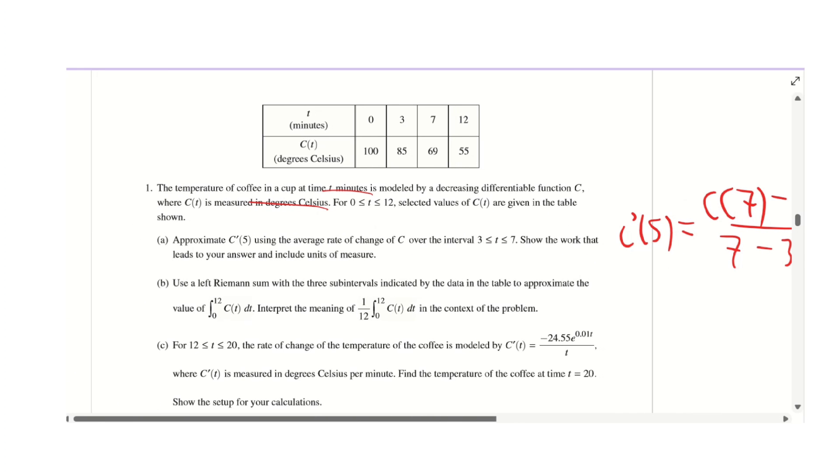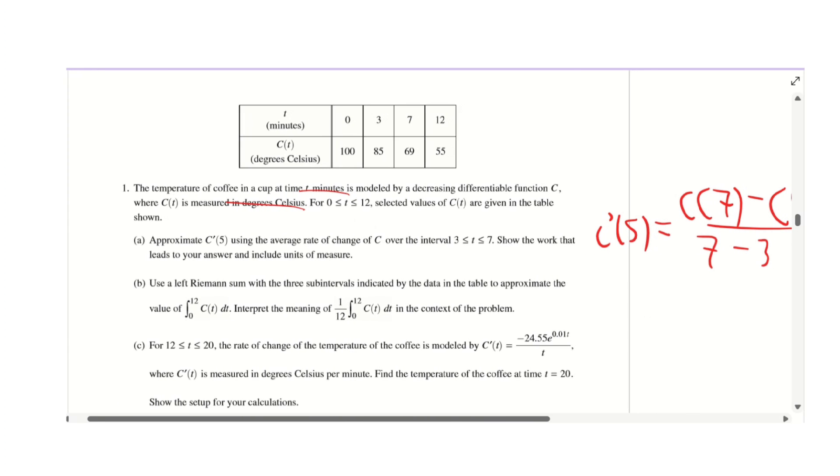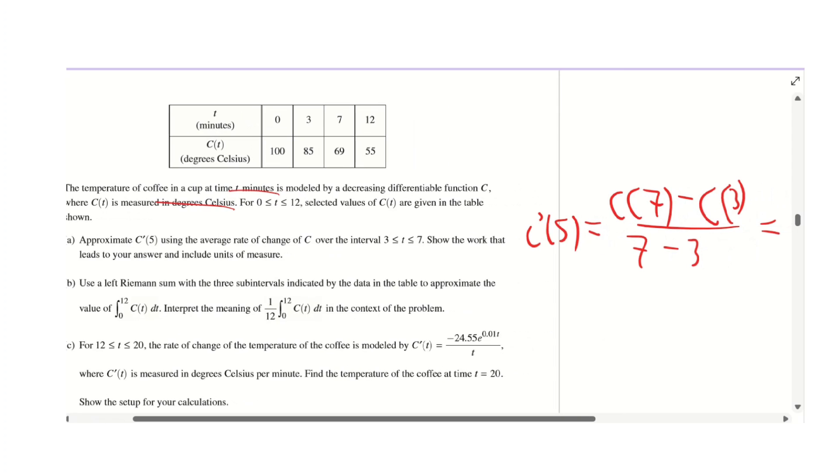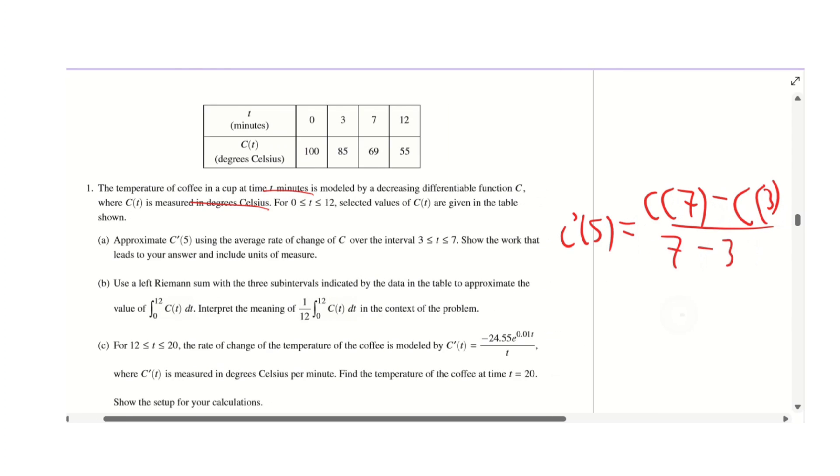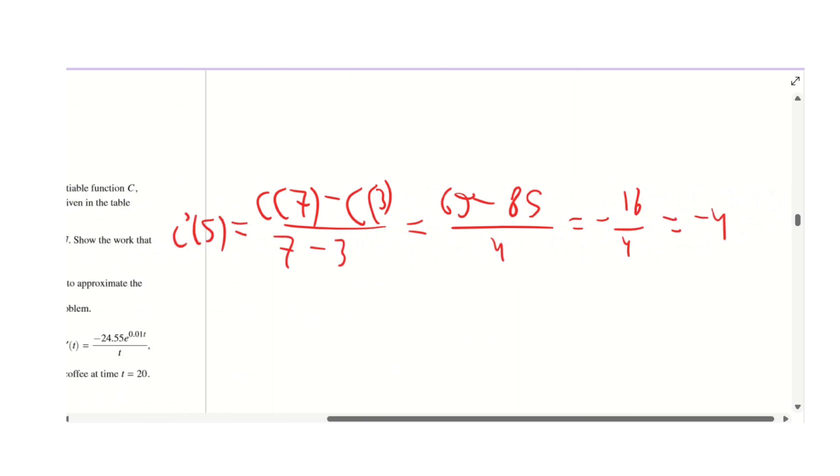We have to interpret it with units of measure. Since it's the derivative, that would be the slope, which is degrees Celsius per minute.